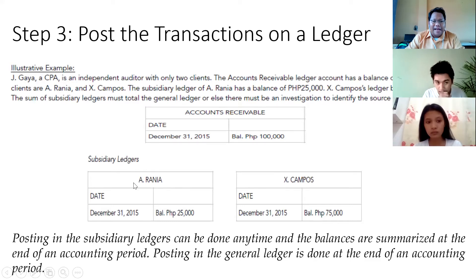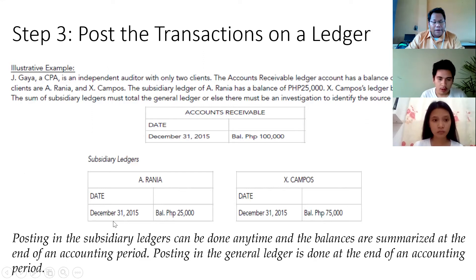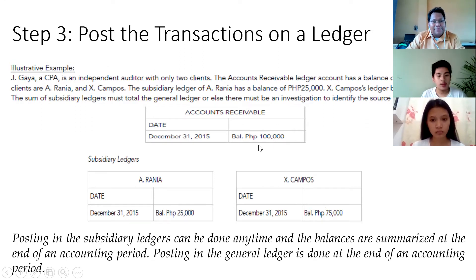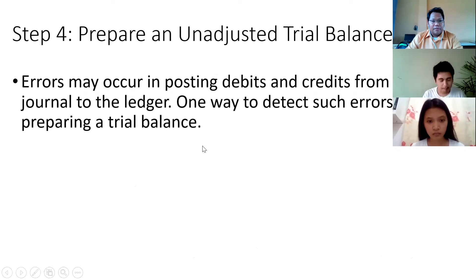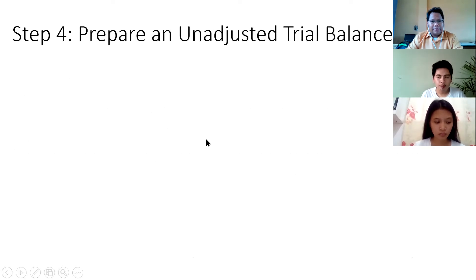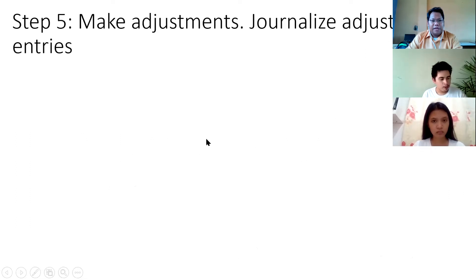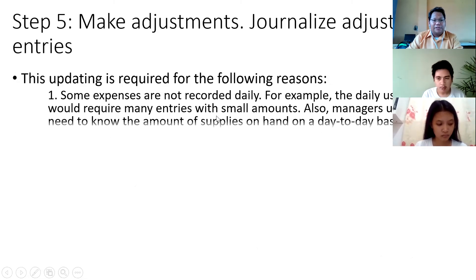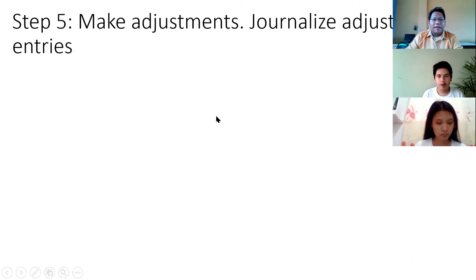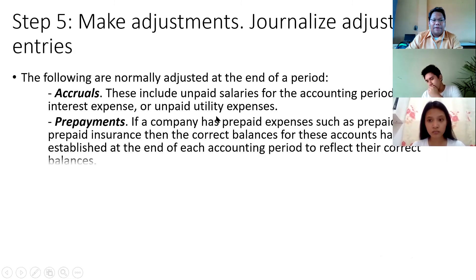A. Rania is here, X. Campos is on the other side. The total of 25 plus 75, which is 100, is recorded under the general ledger for accounts receivable. Let's move quickly to reach the financial statements.